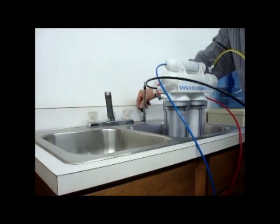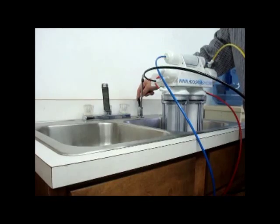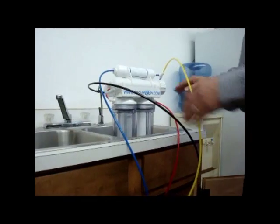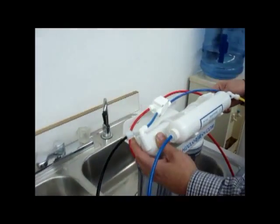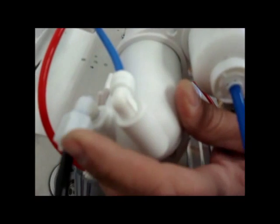Then we can relieve our pressure by opening our RO spigot on the sink. The membrane goes into this housing here. Of course you have one inlet and two outlets: the pure water and the drain water.